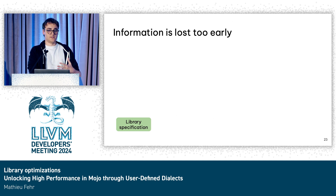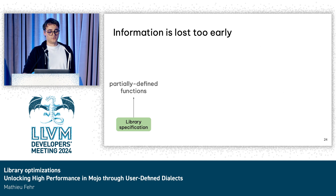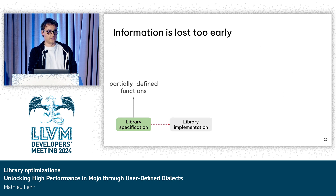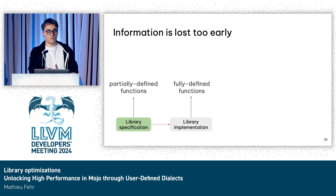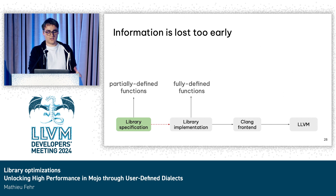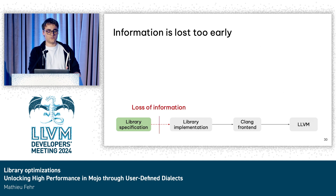One of the reasons is that we have information that is lost way too early in the compiler pipeline. When we define the library — say, the std::vector library — we only have functions that are partially defined. We say the capacity may change, but we don't say it actually doubles, and we don't specify in which cases it's going to change. From the library specification, we define the actual implementation in the CPP files, where everything is fully defined. When this goes to the Clang frontend and then to LLVM, those optimizations are actually illegal at that point because we lost the information too early.